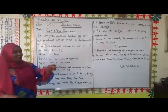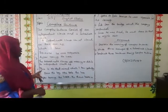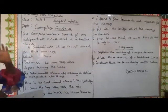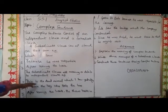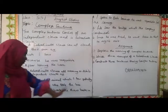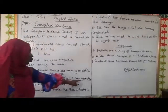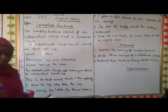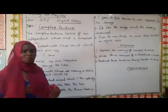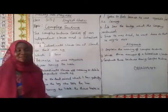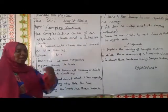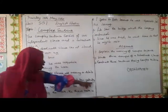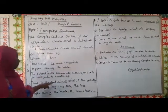Let us look at how you can bring your subordinate clause and your independent clause together to express complex meaning. Number one: 'This is the dead animal which I saw yesterday.' The word 'which' shows you where the subordinate clause begins. If I just say 'which I saw yesterday,' you would not understand because I'm not expressing a complete thought. But once I say 'this is the dead animal,' you understand that the subordinate clause is giving detail about the dead animal.